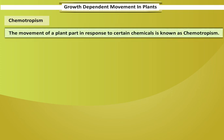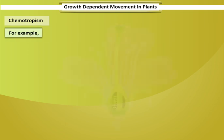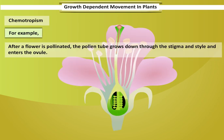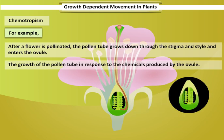The movement of a plant part in response to certain chemicals is known as chemotropism. For example, after a flower is pollinated, the pollen tube grows down through the stigma and style and enters the ovule. The growth of the pollen tube occurs in response to the chemicals produced by the ovule.